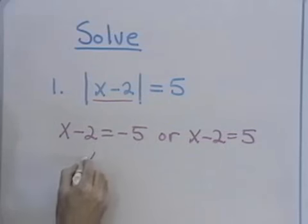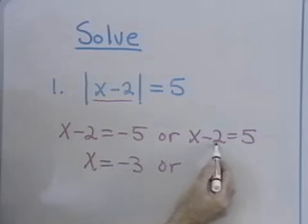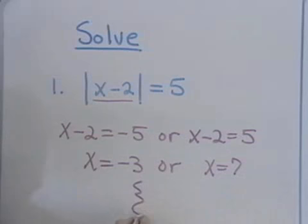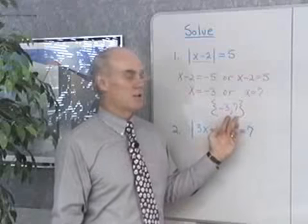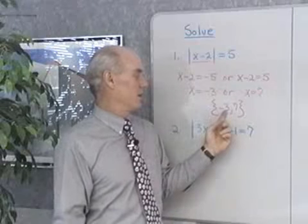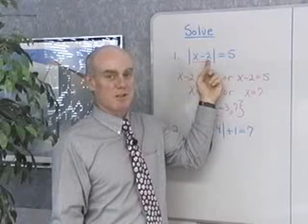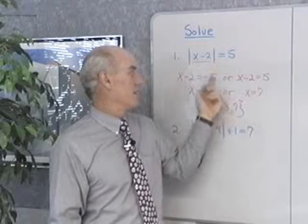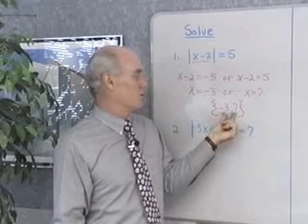I'll add 2 to both sides of this equation and get x is equal to negative 3, and I'll add 2 to both sides of this equation and get x is equal to 7. So our solution set for this equation is negative 3, 7. Either of these two numbers, if I replace x with them, gives me a true statement. If I put in negative 3 for x, I have negative 3 minus 2, which is negative 5, the absolute value of which is 5. If I put in 7, I have 7 minus 2, which is 5, the absolute value of which is 5. So, two solutions.